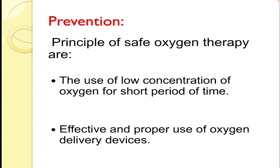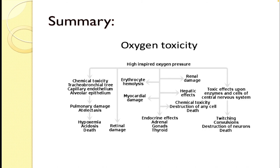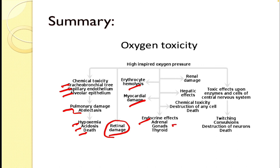How can we prevent it? The principles of safe oxygen therapy are to use low concentrations of oxygen for short durations of time. Effective and proper use of oxygen delivery devices also helps to prevent oxygen toxicity. In summary, chemical toxicity leads to tracheobronchial damage, alveolar epithelial damage, and capillary endothelial damage, causing pulmonary damage and atelectasis, which may lead to hypoxemia, acidosis, and death. Retinal damage can also occur. Highly inspired oxygen pressure causes erythrocyte hemolysis. There is also myocardial damage, endocrine effects such as adrenal, bone, and thyroid damage, and chemical toxicity can destroy any cells leading to death. There are also hepatic effects, renal damage, and toxic effects on CNS enzymes causing twitching, convulsions, and destruction of neurons.